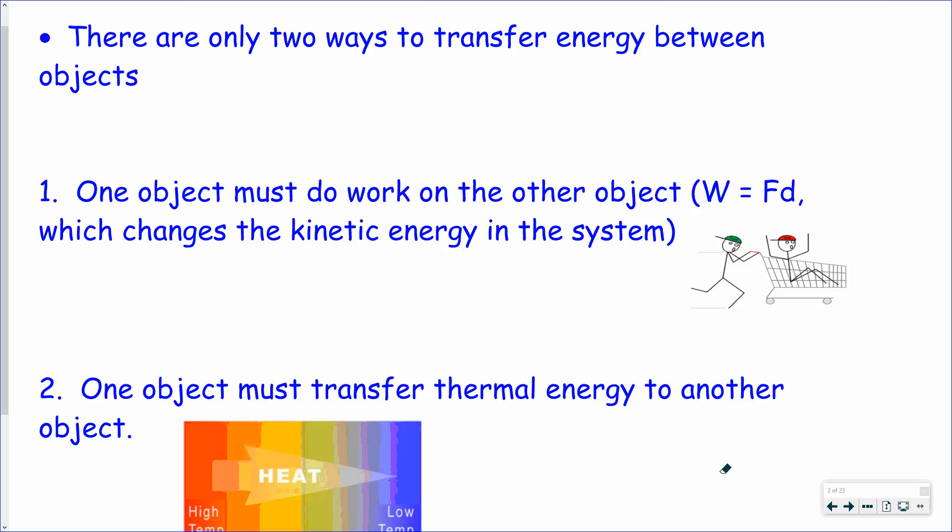So there are two ways to transfer energy between objects. There is the mechanical energy way, way number one, where the work done on an object increases the energy in that object or increases the kinetic energy in that object. I gave you the example of the guy pushing another guy in a cart, because the guy in the green hat is doing work to the guy in the red hat, and so the cart and gentleman in the red hat's kinetic energy is increasing.